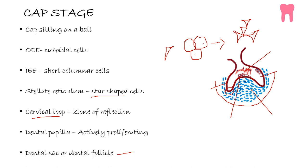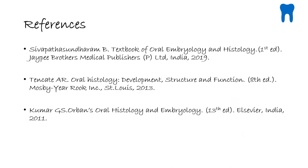The dental papilla is now like a ball — it is highly condensed and lies in the concavity underlying the enamel organ. So the cap stage altogether can be described as a cap sitting on a ball, where the cap is the enamel organ and the ball is the ecto-mesenchymal condensation.